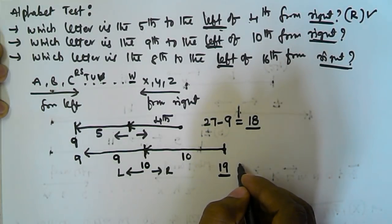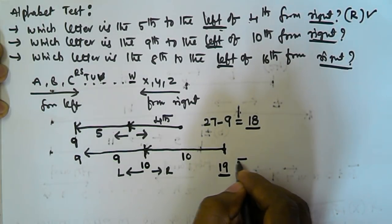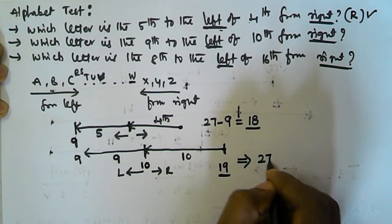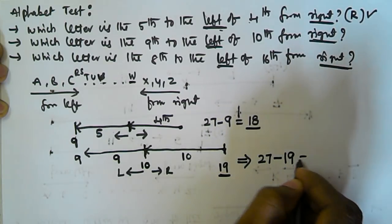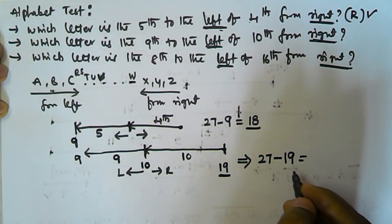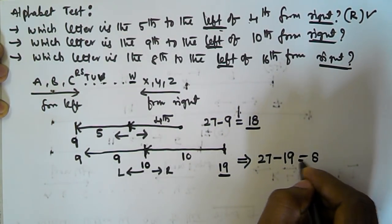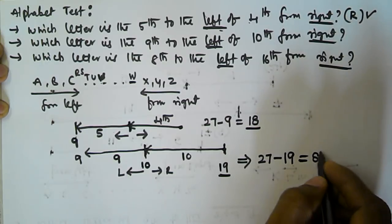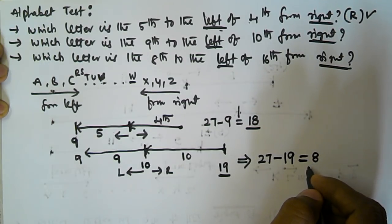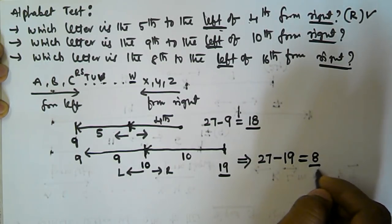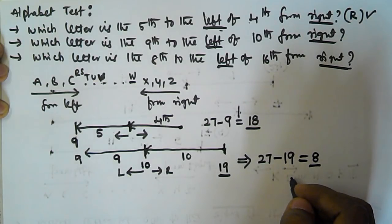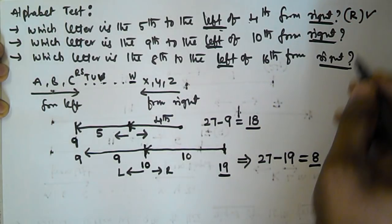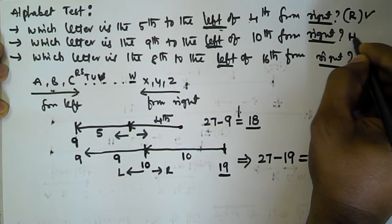So from the right we move nineteen positions. To convert from right to from left, we subtract from 27: 27 minus 19 equals 8. The eighth letter from the left is H. So the answer for this problem is H.